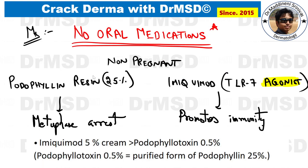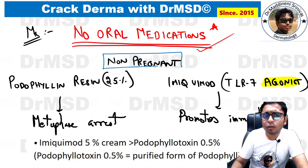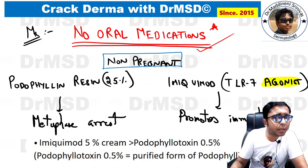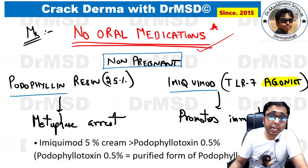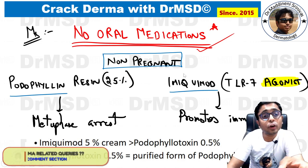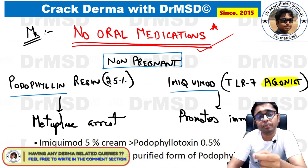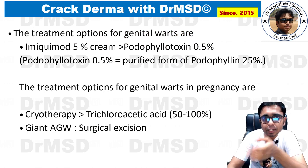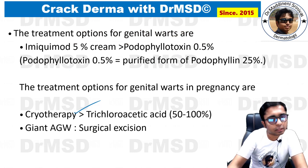No oral medications are available for warts. In a non-pregnant woman, podophyllin or imiquimod can be used. In a pregnant woman, a different approach is needed because podophyllin and imiquimod are teratogenic. The alternatives are trichloroacetic acid application or cryotherapy, with cryotherapy being more preferred in pregnant women with genital warts.